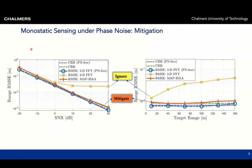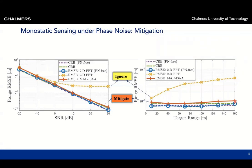Now we can use this knowledge in two ways. First is mitigation of the phase noise. The left figure shows the range RMSE as a function of the signal-to-noise ratio. In orange is the standard 2D FFT for range and Doppler estimation under phase noise — due to the phase noise there is an error flooring effect. With our proposed method, shown in red, we achieve significant performance improvement and basically recover the same performance as the standard 2D FFT in the absence of phase noise. The right figure shows that the further away the target is, the more phase noise hurts you, and with our proposed method we recover almost the same performance as in the phase-noise-free case.